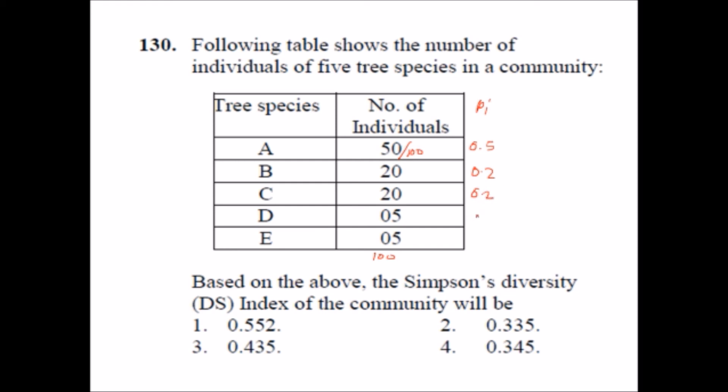In each case we will divide by 100, then we will get the relative number of individuals compared to the other: 0.5 here, we will get 0.2, 0.2 again, 0.05 and 0.05. Now what we have to do, we simply square this pi. Pi square we will get 0.25, 0.04, 0.04, 0.04.